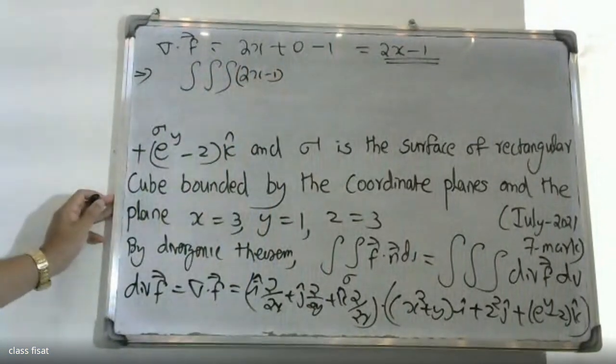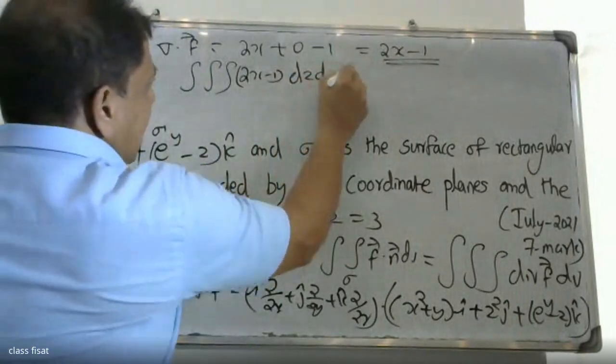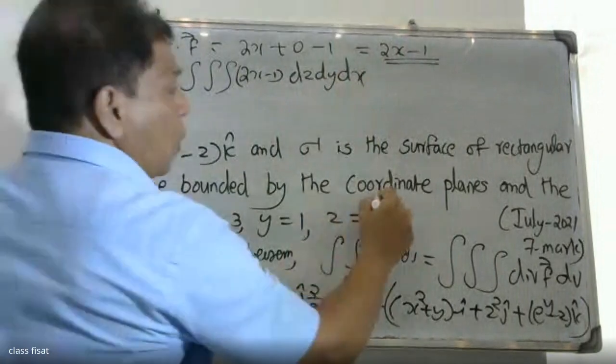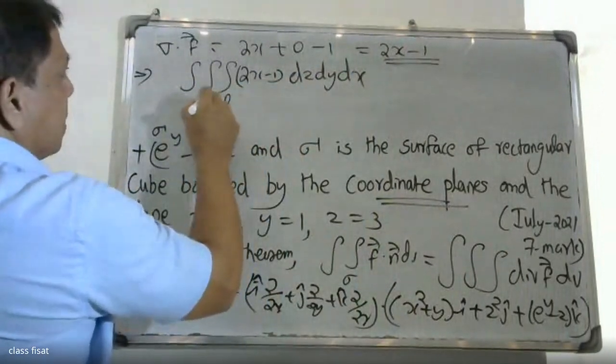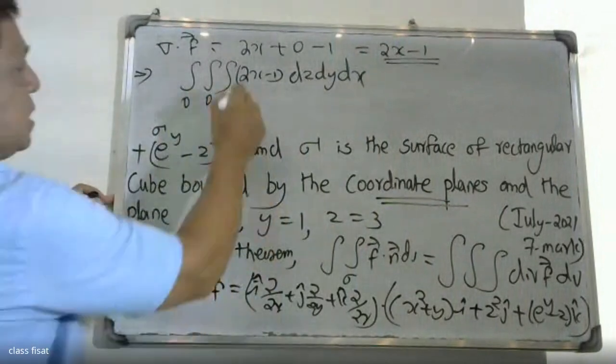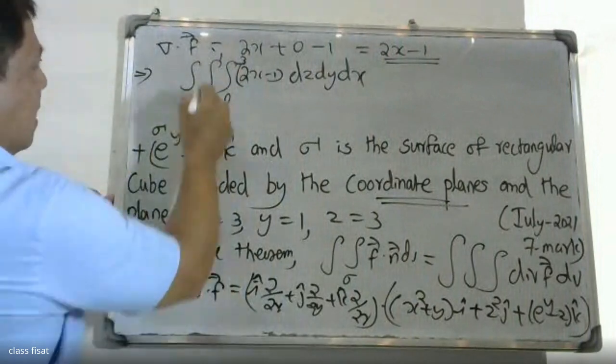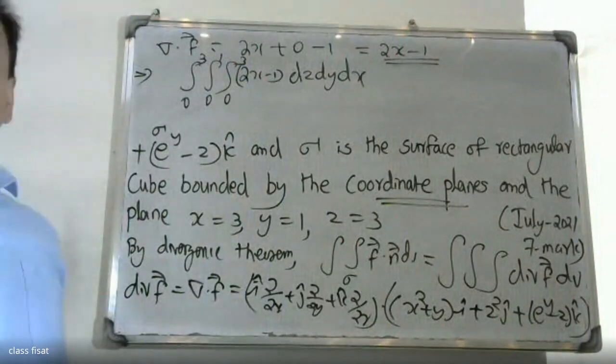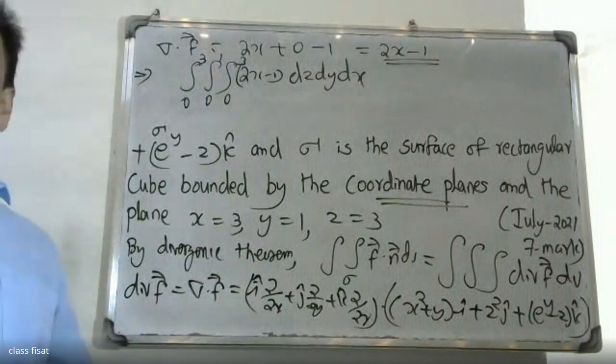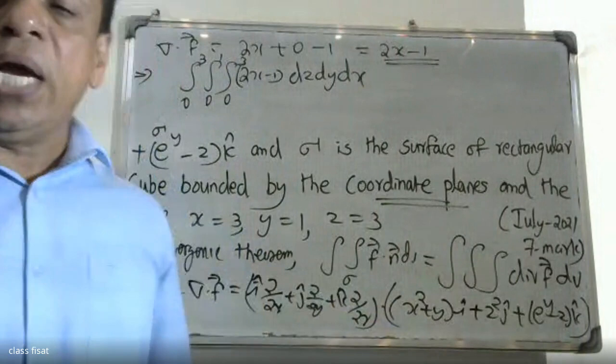dV equals dz dy dx. With the coordinate planes as lower bounds, we have: x from 0 to 3, y from 0 to 1, z from 0 to 3.